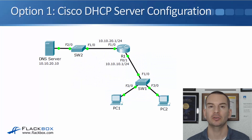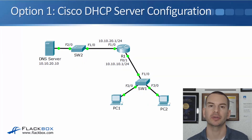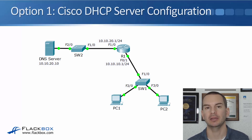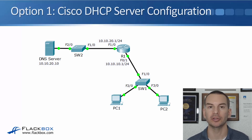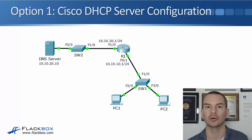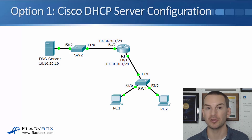In this lecture, you'll learn about the first option for configuring a DHCP server, which is using a Cisco router. You've really got two main options for your DHCP server: you can use a Cisco router, or you can use an external server, which is probably going to be running on Windows, Linux, or Unix. We'll take a look at the first option here, which is using a Cisco router.